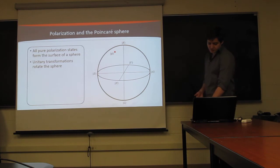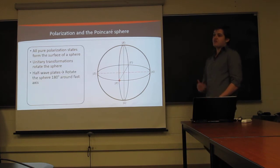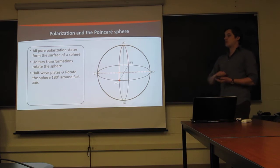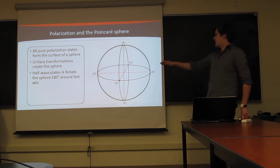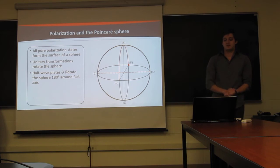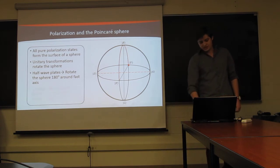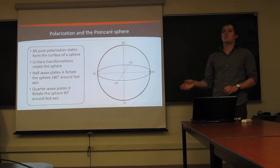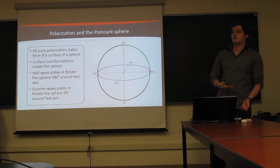For our specific examples, a half-wave plate that we use will act to just rotate points on the sphere by 180 degrees. If we take a half-wave plate with its fast and slow axis in diagonal and anti-diagonal, then a point starting at horizontal will be rotated all the way and become a vertical polarized photon afterwards.